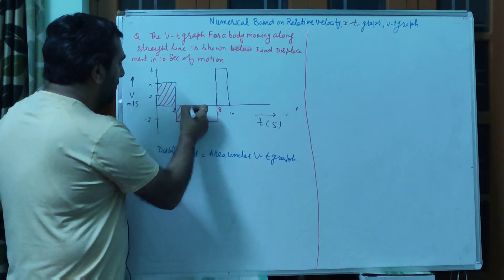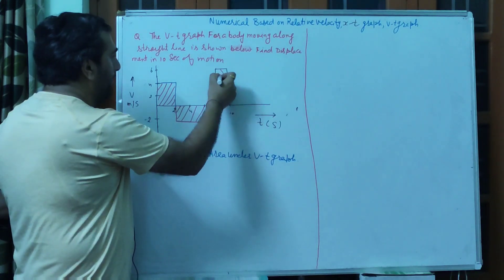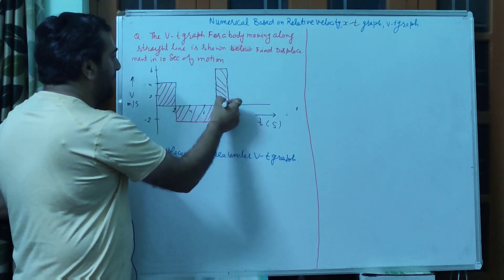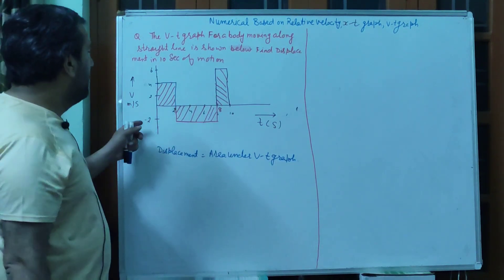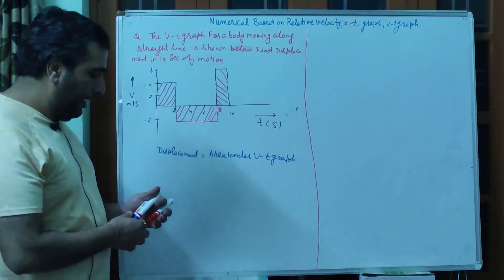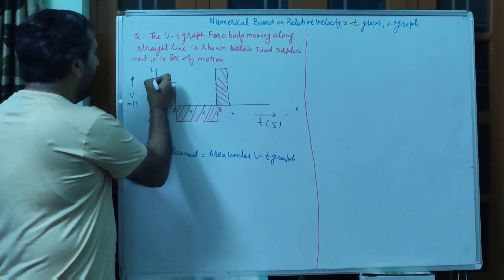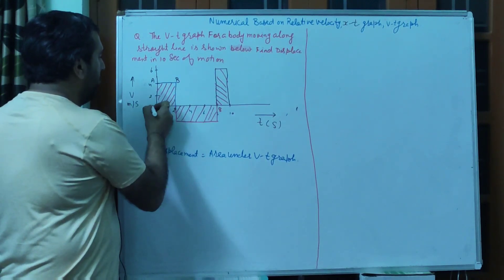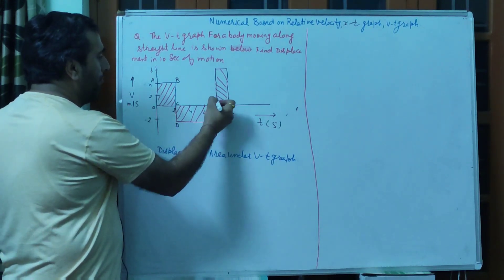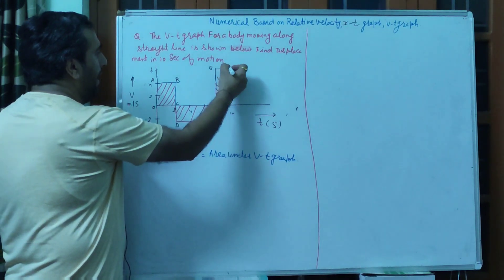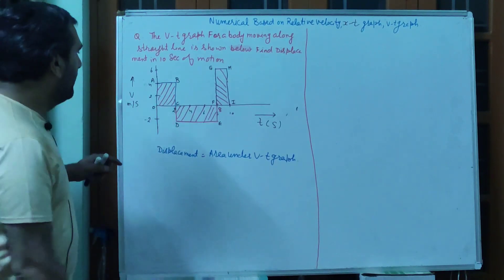तो सबसे पहले जो area 10 seconds तक है वो 0 से 10 seconds तक है। जो मैं shaded region लिख रहा हूँ, that is the area under velocity-time graph — this part, this part, and this part। जो मैंने shaded region किया है, this is the area under velocity-time graph between 0 to 10 seconds। अब इस area को मैं 3 parts में divide कर देता हूँ — A, B, C, D, E, F, G, H, I।